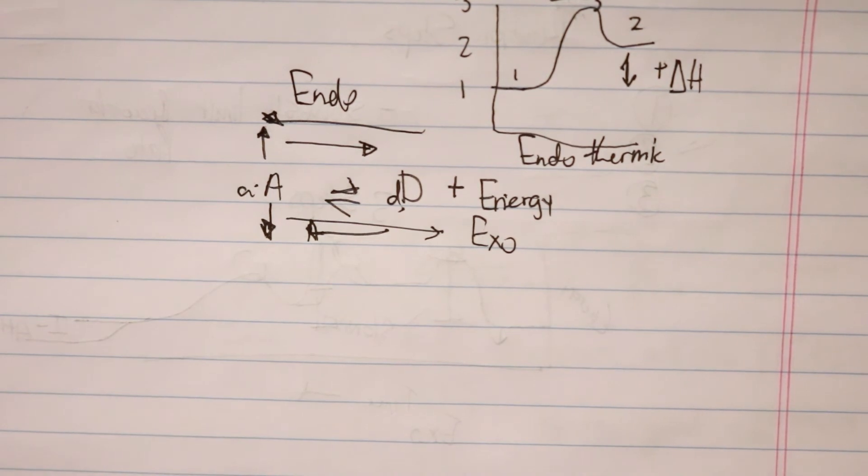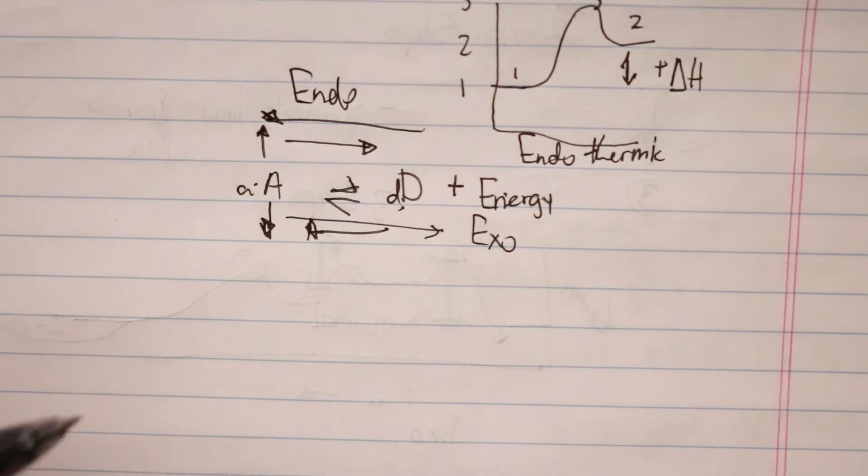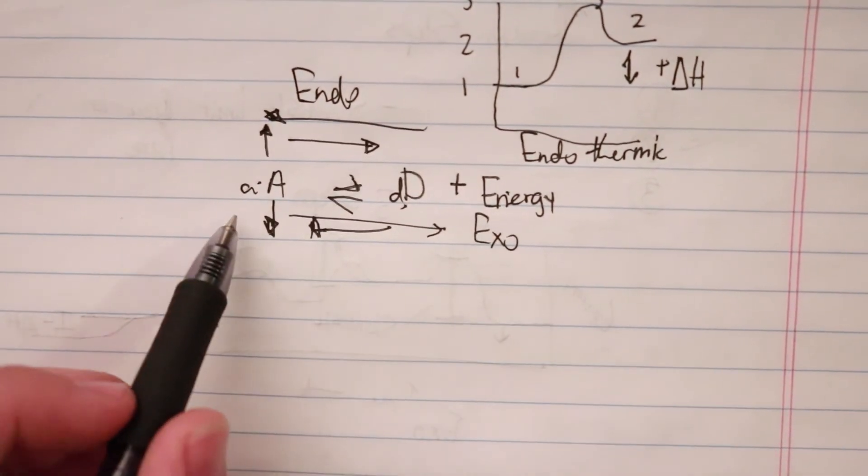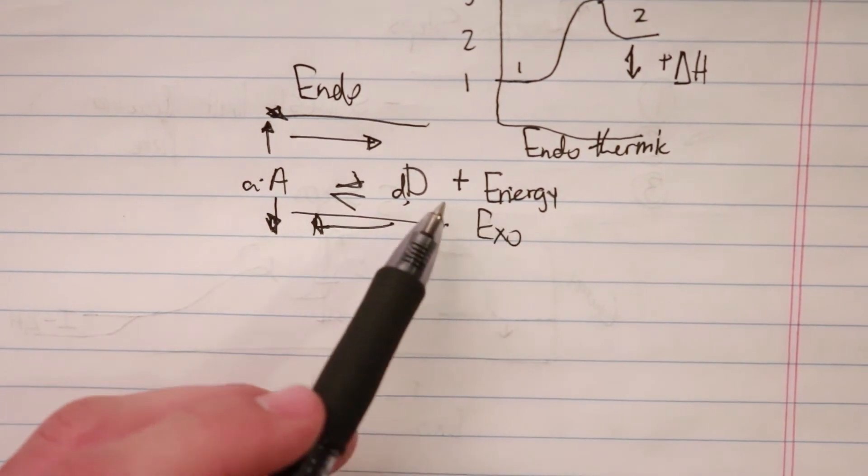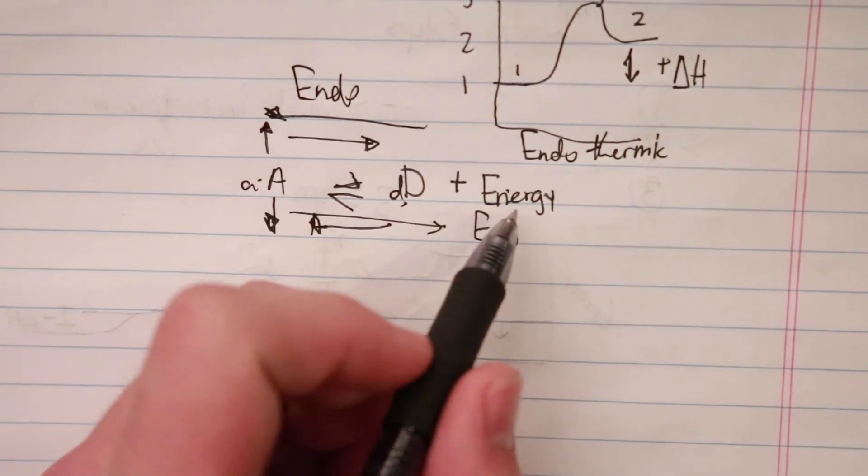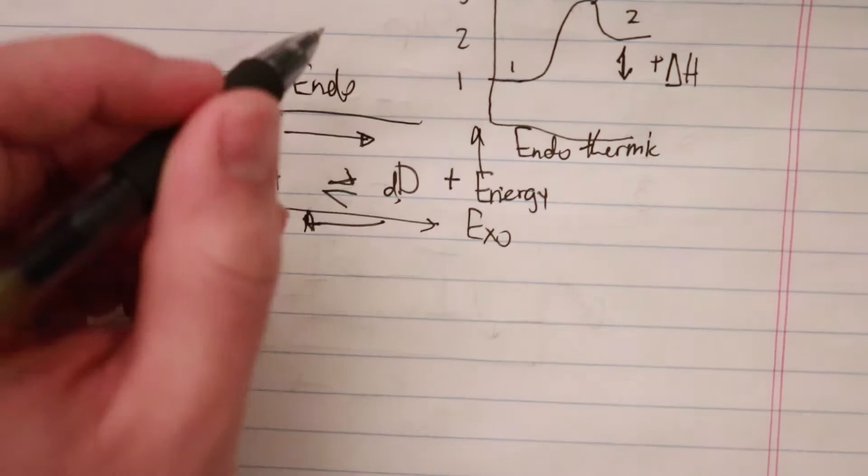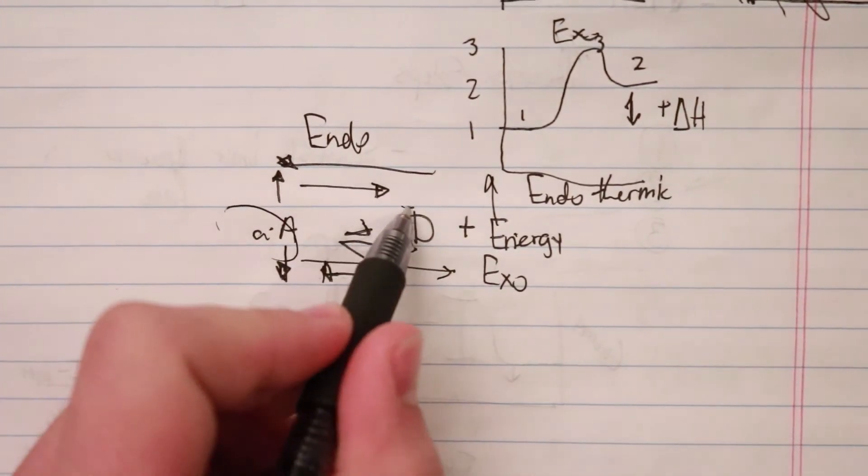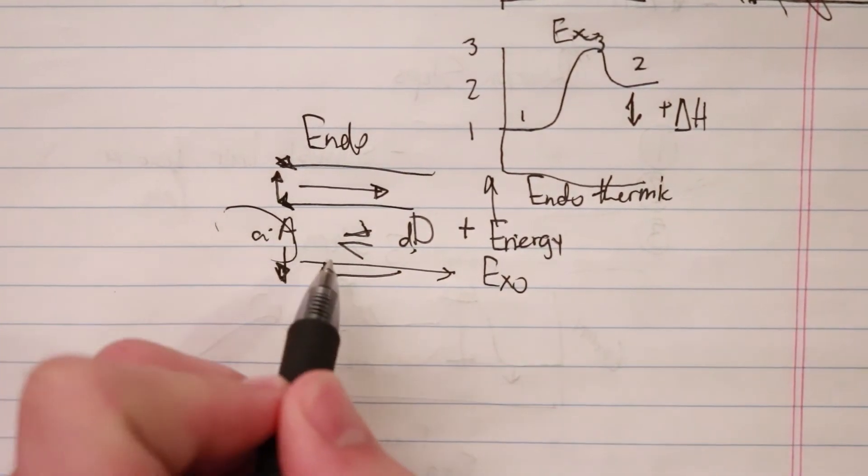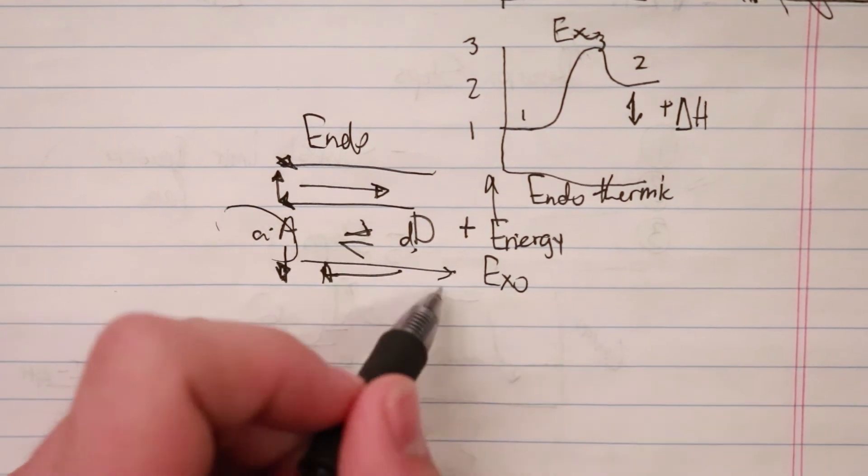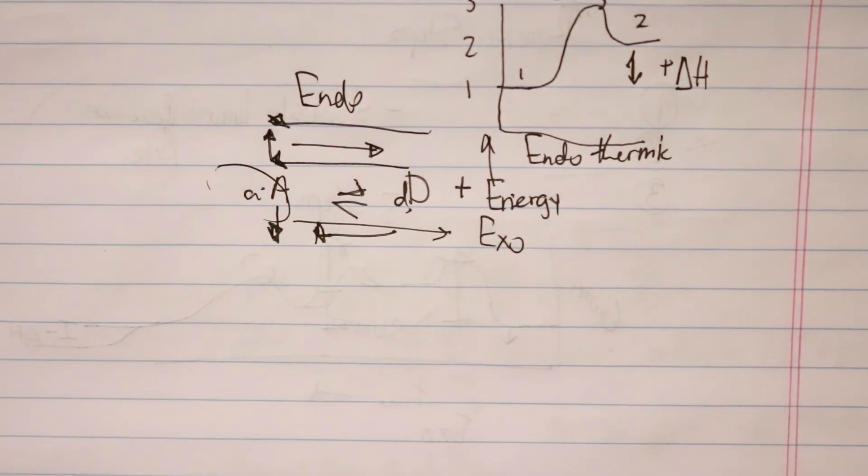So when we're trying to look at—if I added heat and more stuff was produced, then I can think, okay, where did I add stuff? Where would the energy come out? I put energy on my equation, and I can see, oh, I added some energy and more A was produced. That favors the reverse reaction. So I know that the forward reaction is exothermic, and that's a good way to think through those problems.